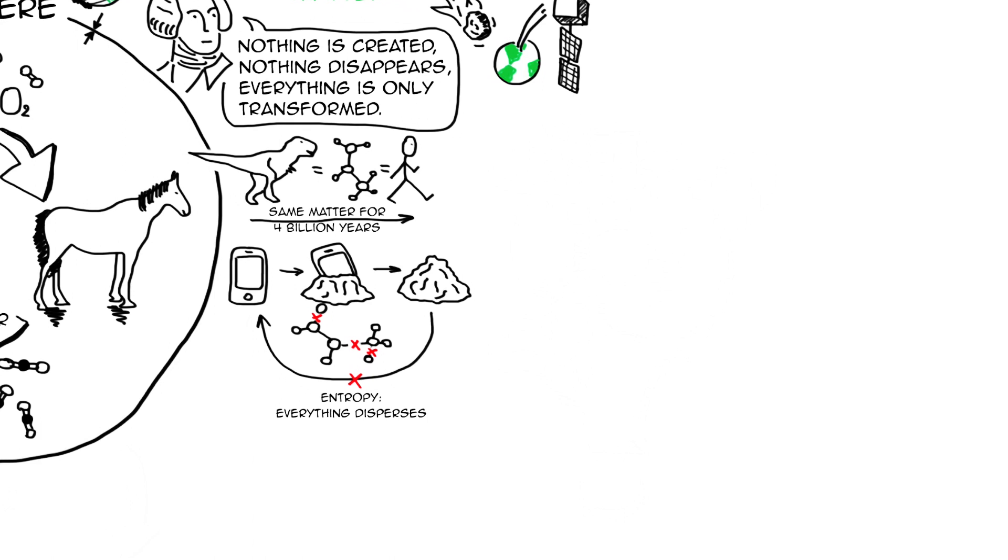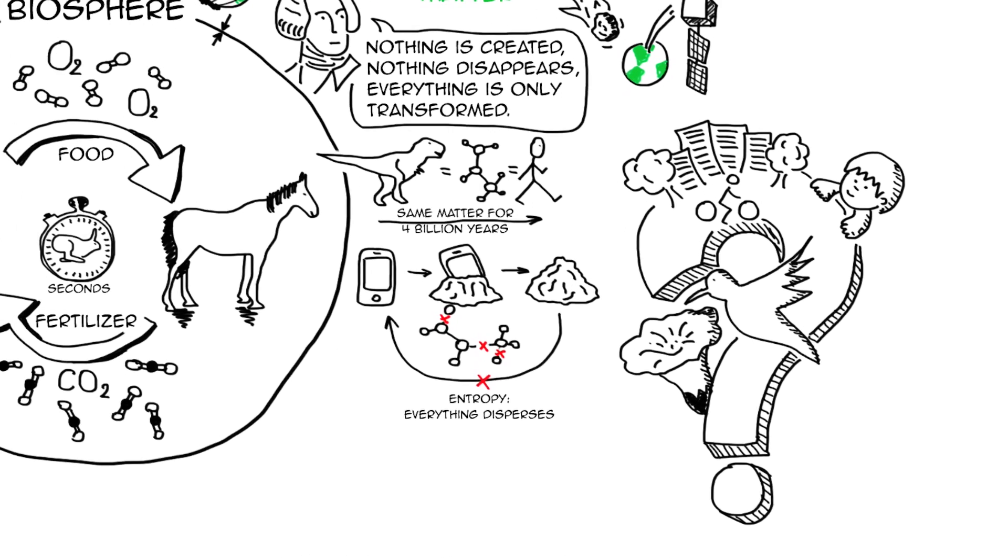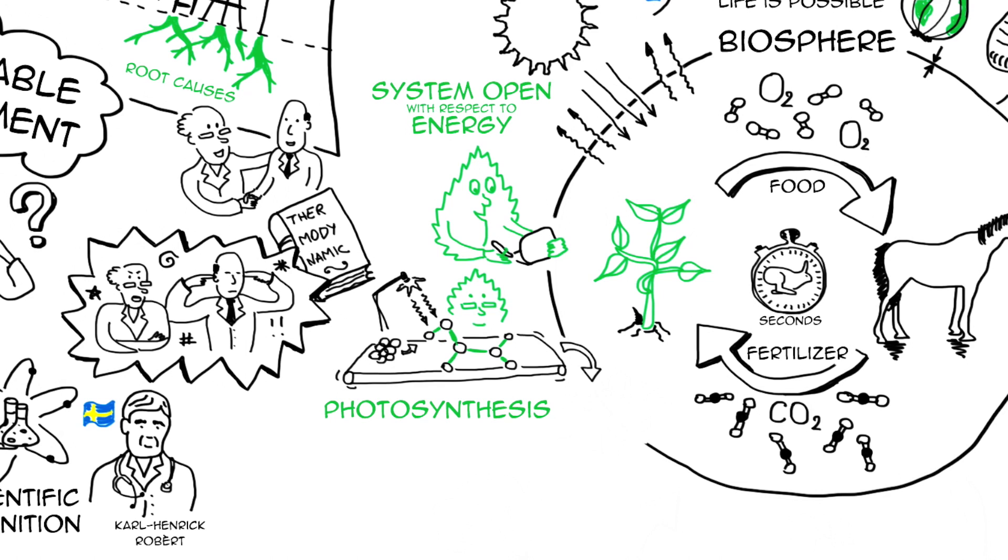So if everything disperses all the time, how is it possible that we live here in such a beautiful world with beautiful nature, cities, people, flowers, and so on? Well, this is what photosynthesis does for us. Photosynthesis pays the bills. It enables plants to use the energy from the sun in order to reorganize matter and create new structure.